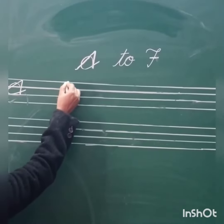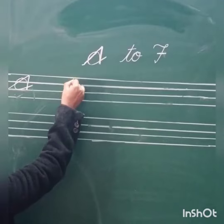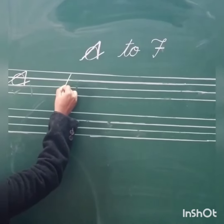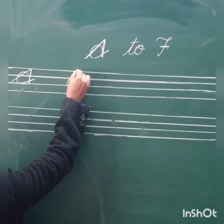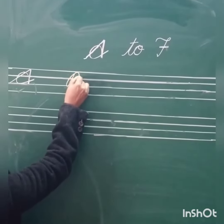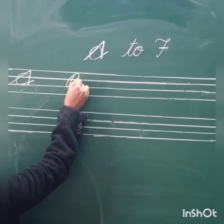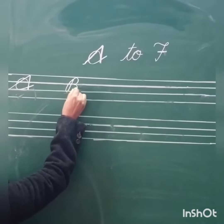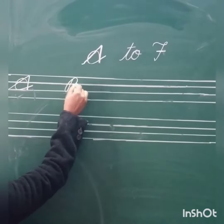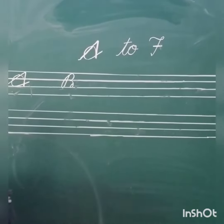Next, cursive B: slanting, round, curve — hold cursive B.